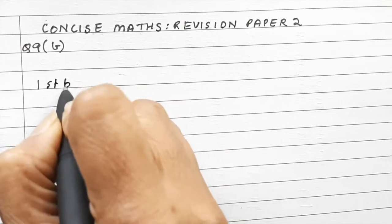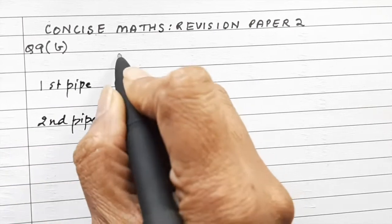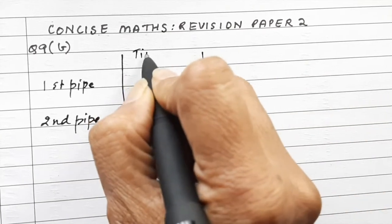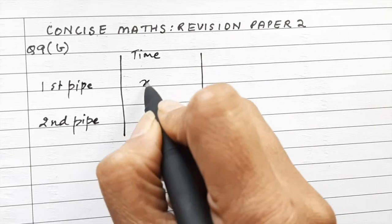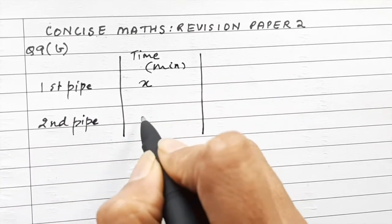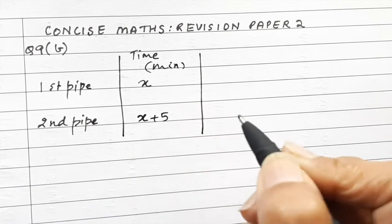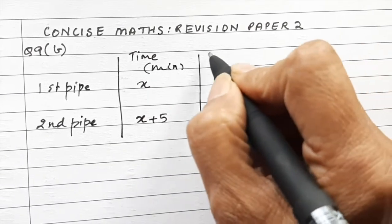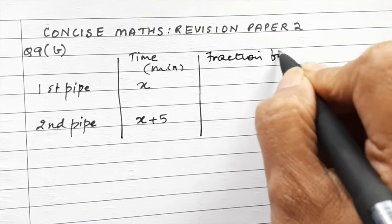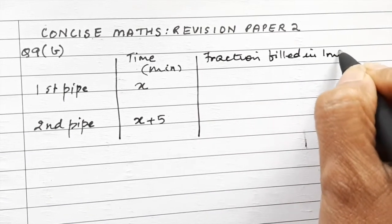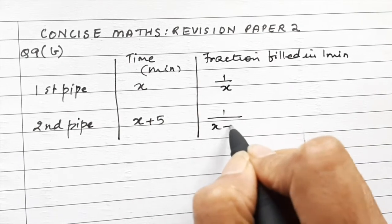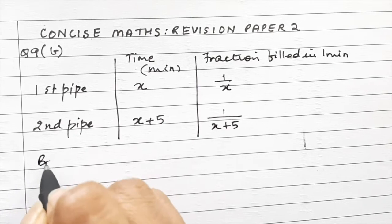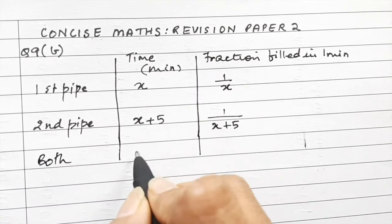Now let us see how we solve this. We will set up columns for the first pipe and the second pipe, showing the time taken to fill the tank. If x is the time taken by the first pipe, then the second pipe will take x plus 5 minutes. The fraction of the cistern filled in one minute by the first pipe alone will be 1 upon x, and for the second pipe it will be 1 upon x plus 5.